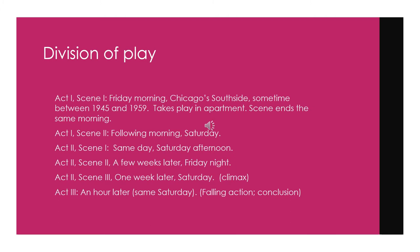Act 2 Scene 1 is the same day, Saturday afternoon. Act 2 Scene 2 is a few weeks later, Friday night. Act 2 Scene 3 is the actual climax of the play, and that's one week later on Saturday. That same Saturday, an hour later, is the entirety of Act 3, which includes the falling action and the conclusion. So as I mentioned in the very first PowerPoint concerning plot, the climax doesn't occur exactly halfway through. In this instance, the climax occurs in the fifth part of the play. Act 1 Scene 1 is actually really just an introduction — we don't even have any rising action yet because they have not received the check, but we have been introduced to all of the major characters at this point.